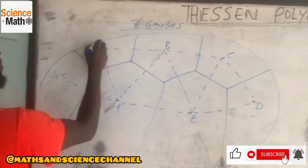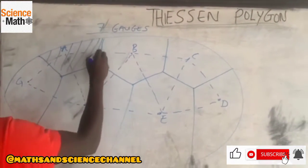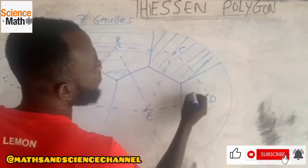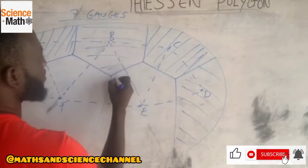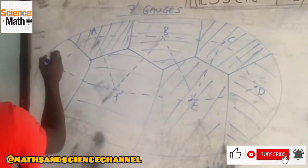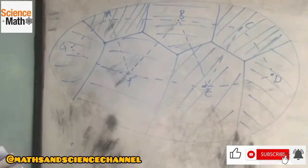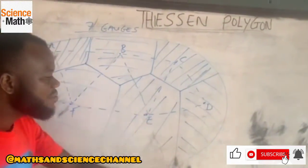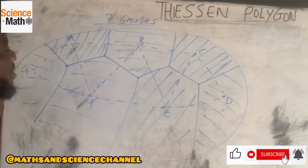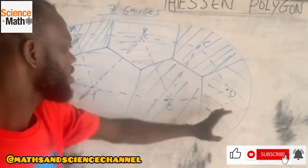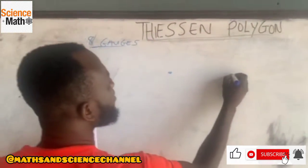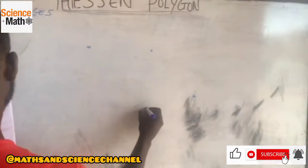So these are the seven gauges. All the calculations follow the same format as well as the conversions. But what you have to do is that these gauges are seven, so we are going to get seven portions. The calculations written A, B, C, D, E, F, and G.